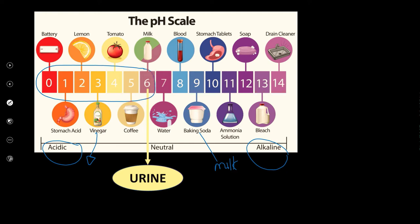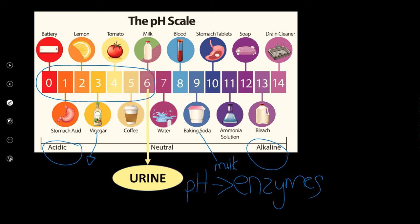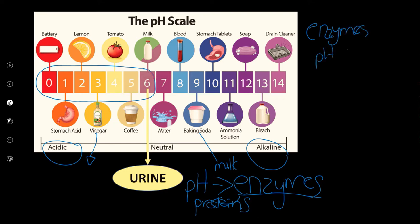When we look at pH, one thing must come to mind: enzymes. When you studied biochemistry, you learned that enzymes control how our body works — enzymes are proteins, and they are pH specific. They will only work at a specific pH. So if we change the pH of anything — say, our blood — the enzymes in our blood cannot work properly.